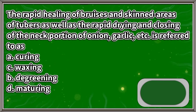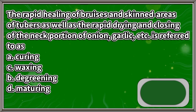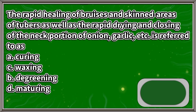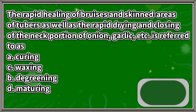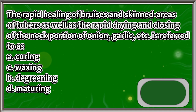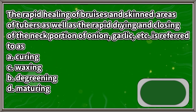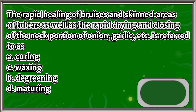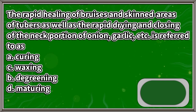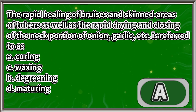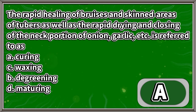The rapid healing of bruises and skinned areas of tubers, as well as the rapid drying and closing of the neck portion of onion, garlic, and shallots, is referred to as: A. Curing, B. Degreening, C. Waxing, D. Maturing. The answer is letter A.